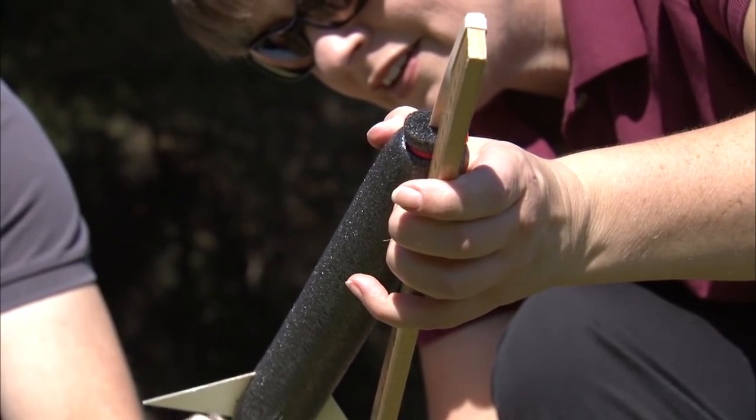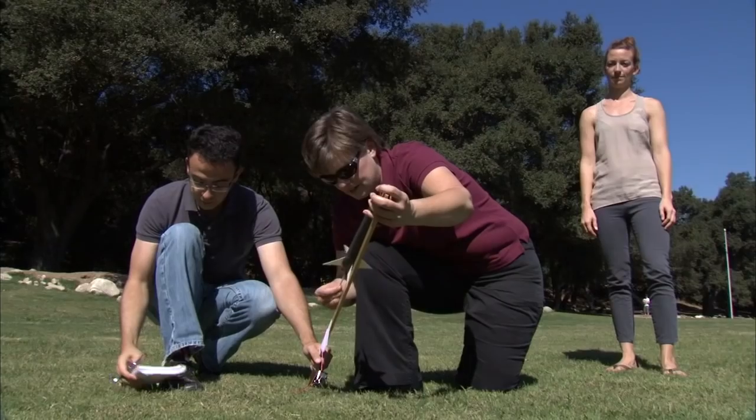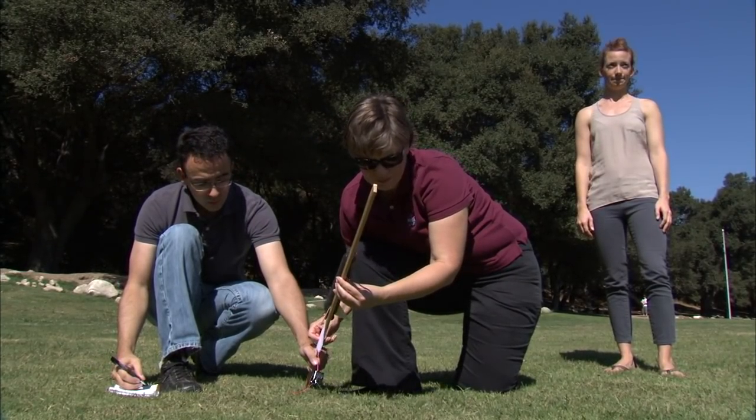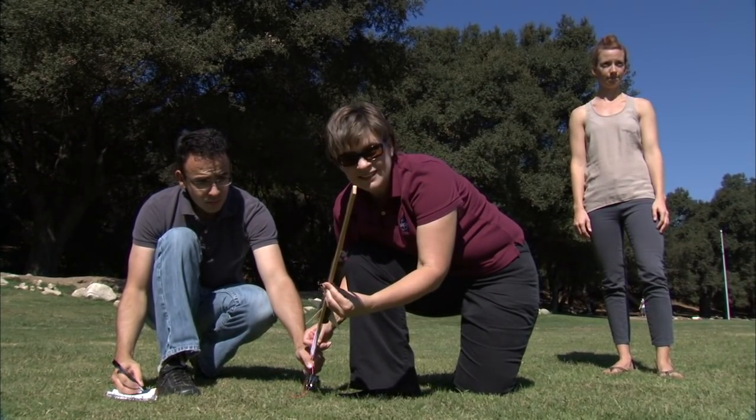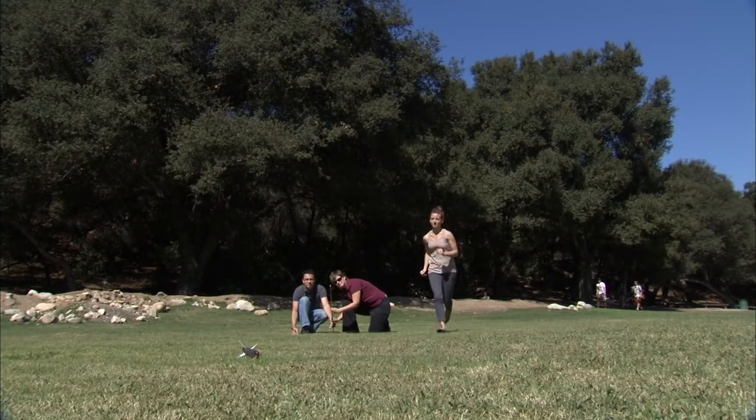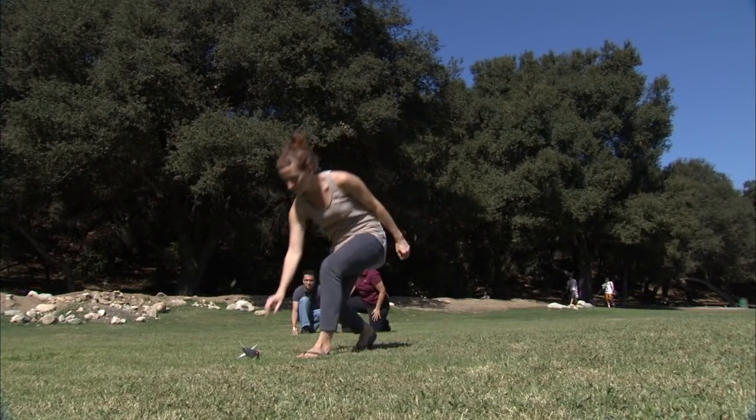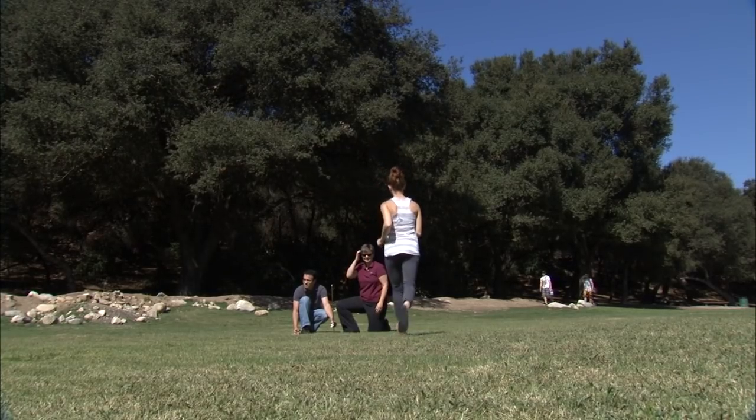The objective of this activity is to determine the best angle to launch your rocket from in order to achieve the greatest distance from your launch site. If you happen to have two friends helping you, one can measure the angle, the other can measure the linear distance.